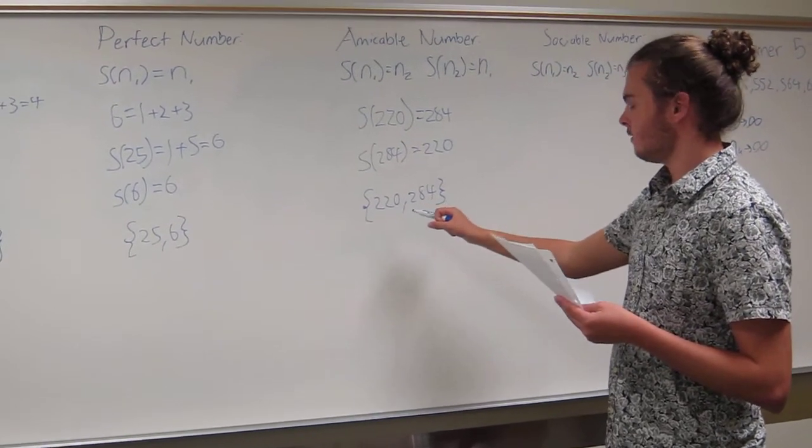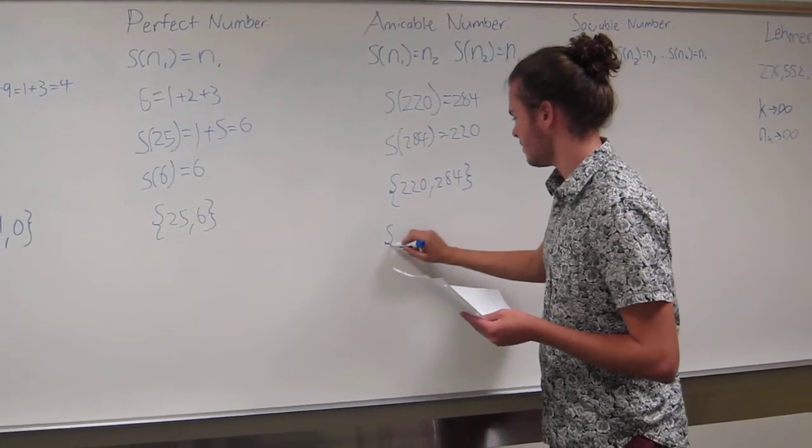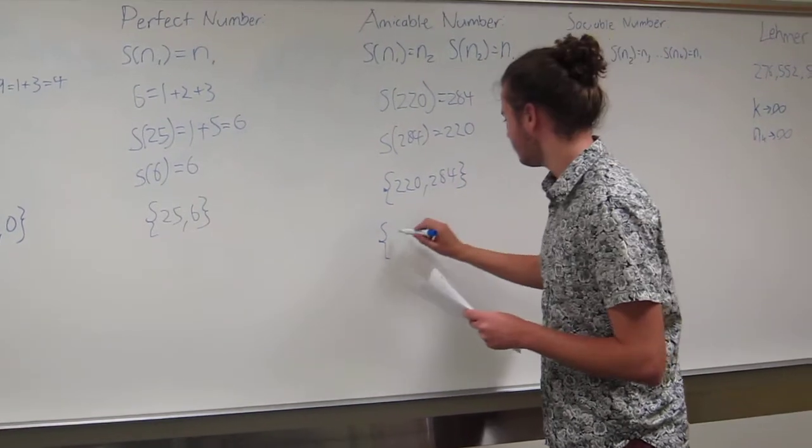And just as a note, this doesn't necessarily have to start with an amicable number to end in an amicable number. Just as a quick example, if you started with 562.